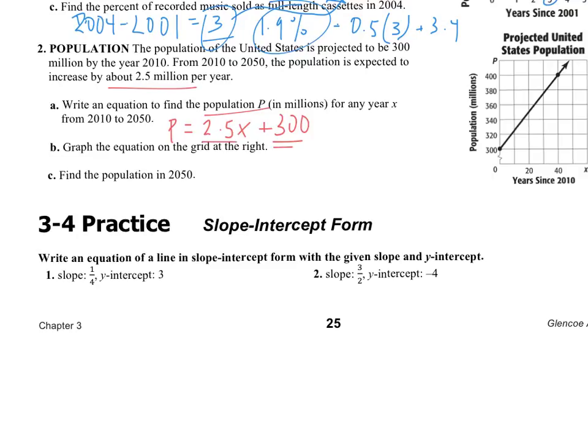Slope, y-intercept. We see this equation already graphed over here. If we had to graph it, we certainly could. We would start here at our y-intercept, 300. How is our rate of change? It changes by 2.5 million for every one year, and we can graph that.